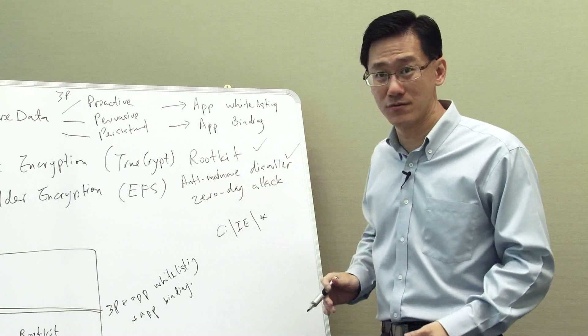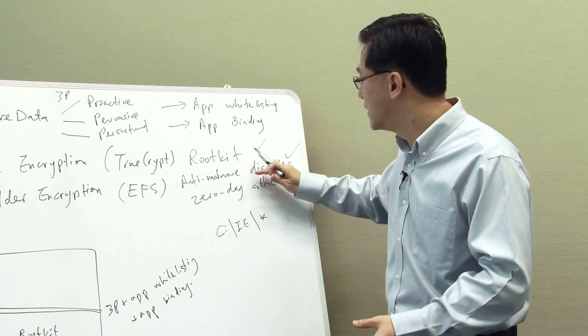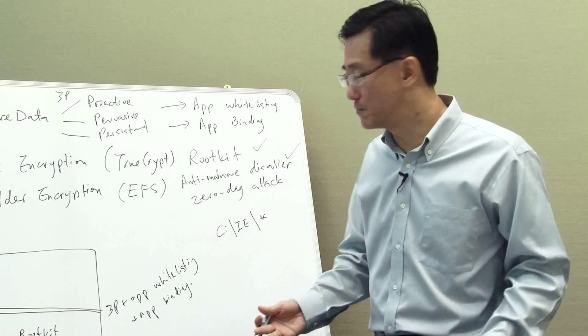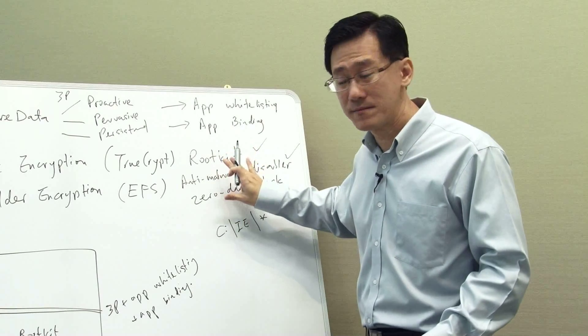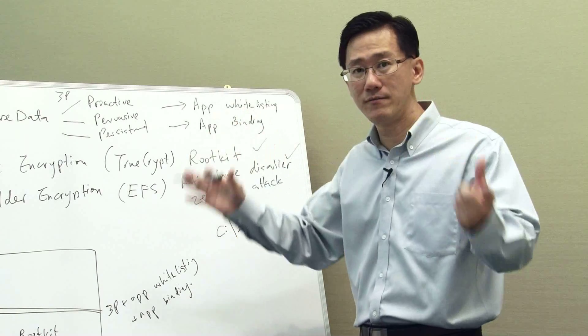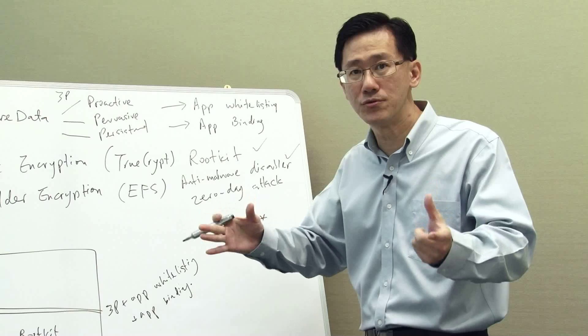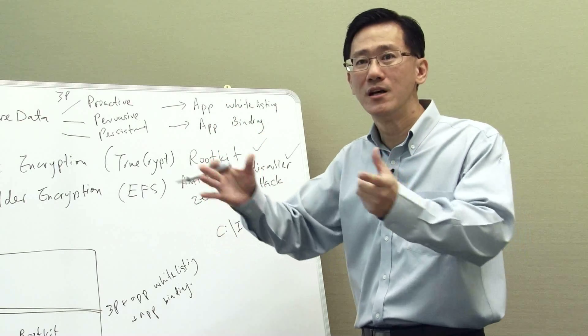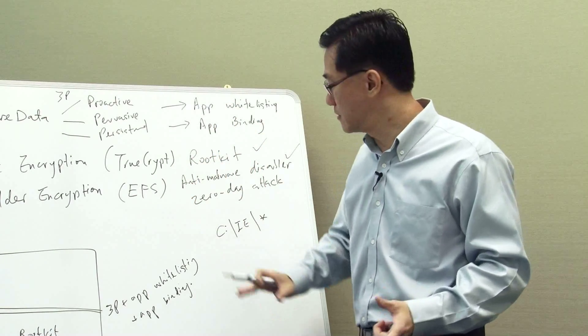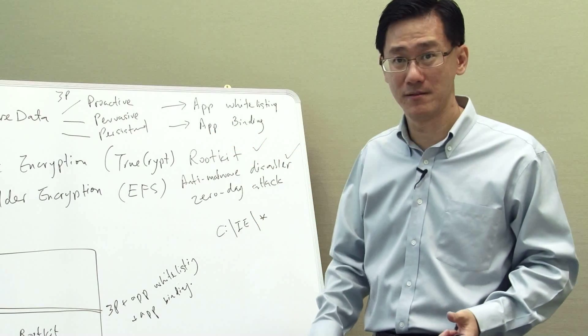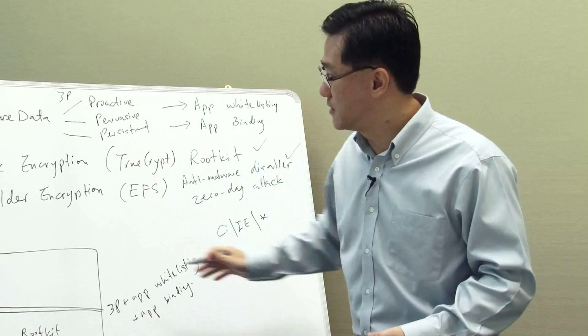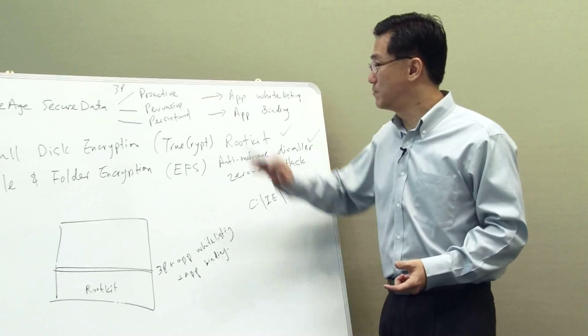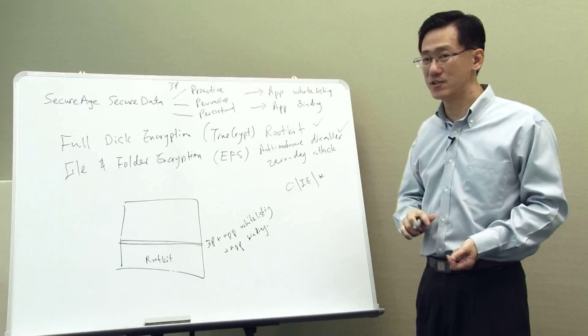At the same time, we also protect you against malware, including the very advanced type of malware where other solutions today cannot solve. They cannot solve rootkit problems, they cannot solve problems when the malware comes in and disables you, we can completely. And for zero-day attacks, we have the solutions to ensure that you can mitigate the risk to the maximum possible extent. And that's where the application binding comes in. So that is the Secure Data 3P plus application whitelisting and application binding solution.